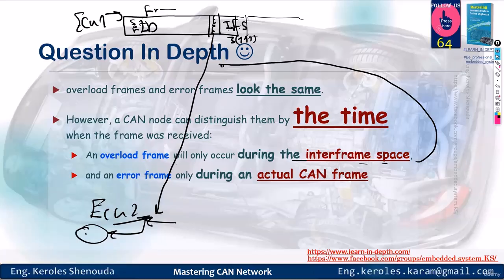So all of a sudden during the IFS, once it notices the bus drops for six bits of zero followed by six echo bits of zero and then eight bits of one, instantly it recognizes that it's an overload frame. But in the case of the error frame, it is sent normally after the inter-frame space has occurred.